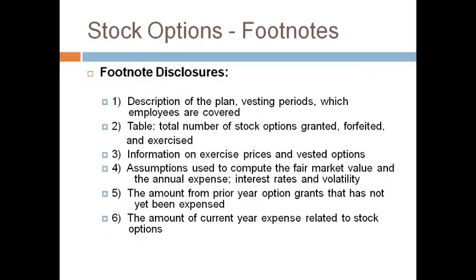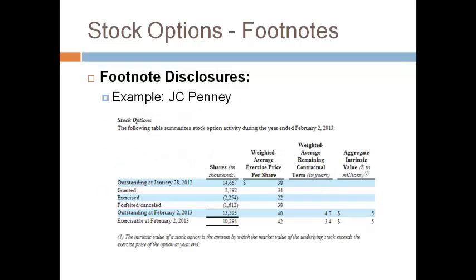Take a moment and read the items that are required to be disclosed in the footnotes. The number of options outstanding is very important — this represents more potential common stock shares that will dilute EPS and the ownership of current owners. The fair market value of options granted is also important because it determines the expense reported on the income statement. JCPenney's footnote shows the activity related to stock options during the current year. The key pieces are the number of options granted, the number of options exercised, and the number of options outstanding at the end of the year. Forfeitures are options that are cancelled because the employee terminated their employment before the vesting period was completed and did not earn the right to purchase stock from the company.